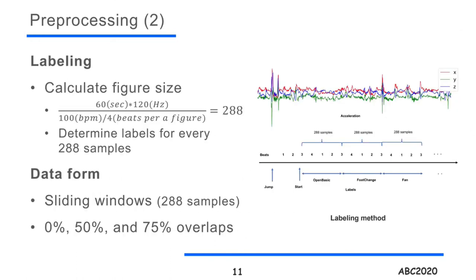In order to create input data form, it is necessary to make label data. In this research, we calculate the figure size — the number of samples in a figure — using sampling rate, BPM, and how many beats there are in one figure. Finally, we determine there are 288 samples in a figure and label the data according to that information.